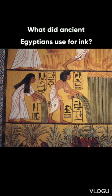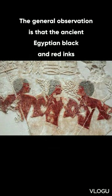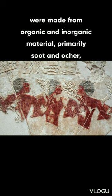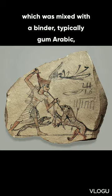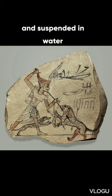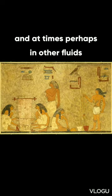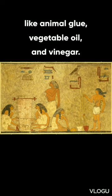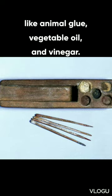What did ancient Egyptians use for ink? The general observation is that the ancient Egyptian black and red inks were made from organic and inorganic material, primarily soot and ochre, which was mixed with a binder, typically gum arabic, and suspended in water, and at times perhaps in other fluids like animal glue, vegetable oil, and vinegar.